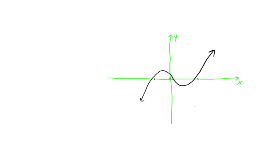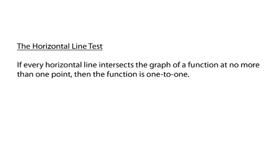There is an easy way to figure this out, and it's called the horizontal line test. Every horizontal line intersects the graph of a function at no more than one point, then the function is one-to-one. So picture your line again. Is the graph a function? Yes, it passes the vertical line test. Is the graph a one-to-one function? Now you picture horizontal lines, and as you draw horizontal lines, they only hit your graph one time, so therefore this is a one-to-one function. We abbreviate that notation as one-to-one.